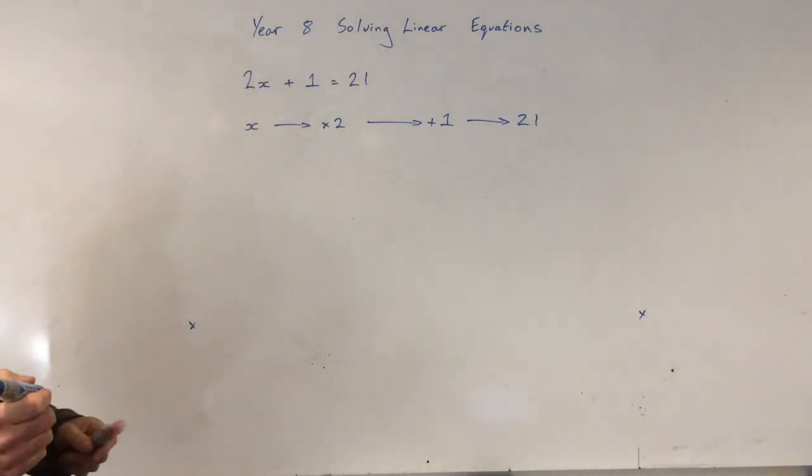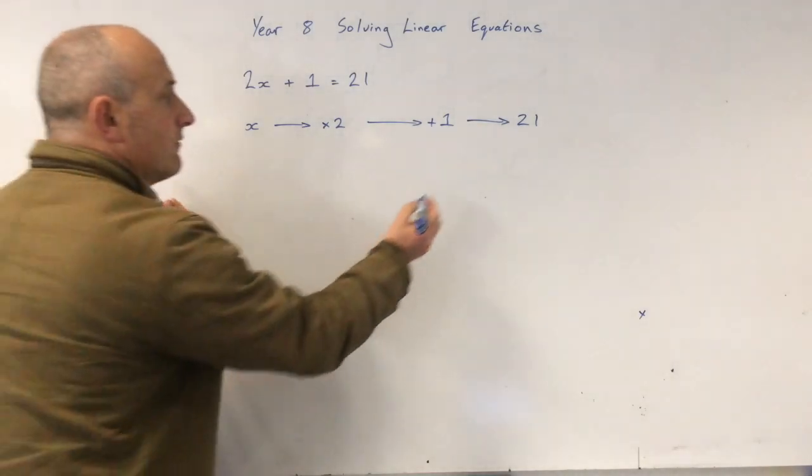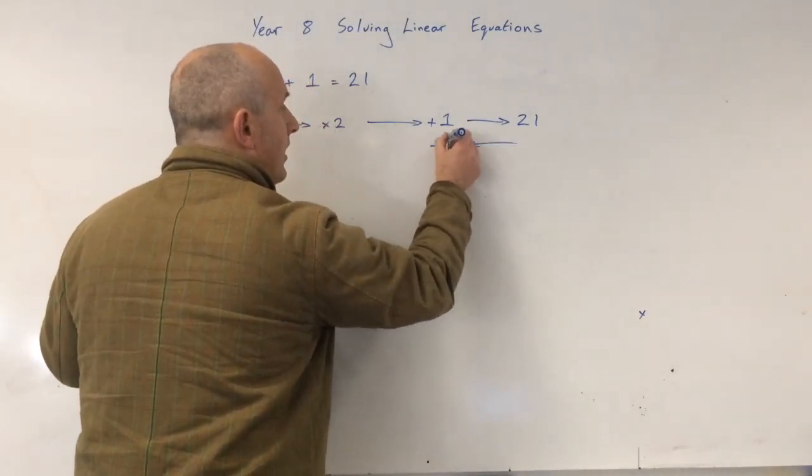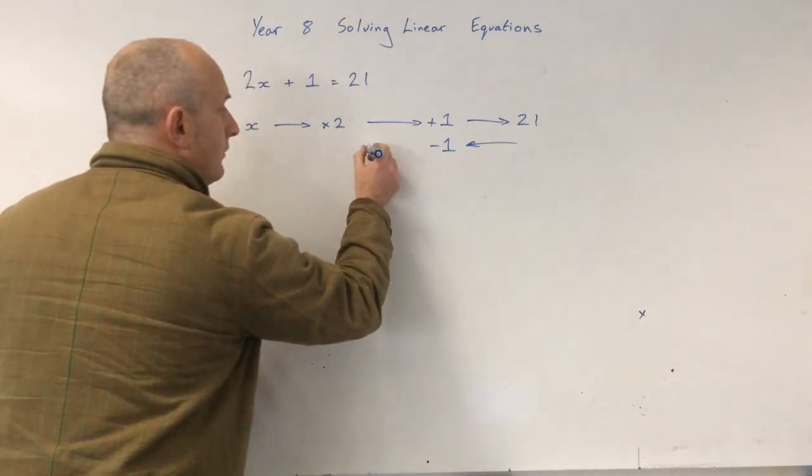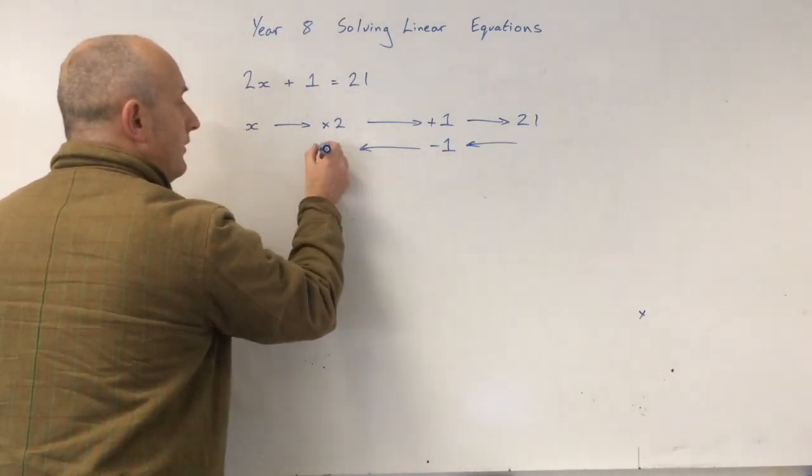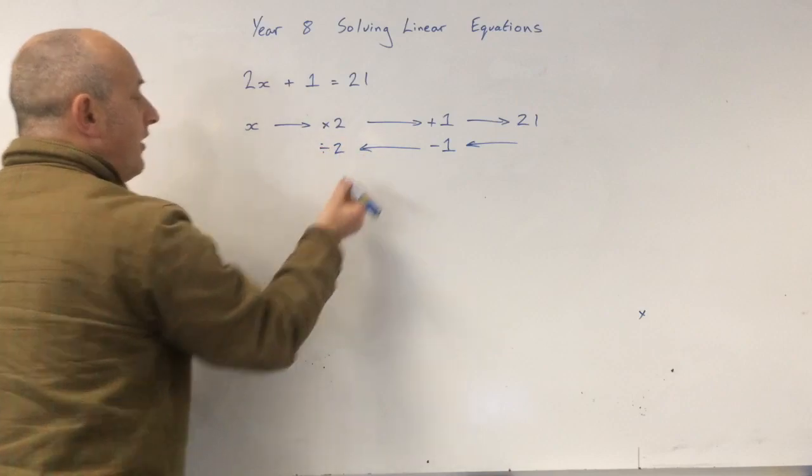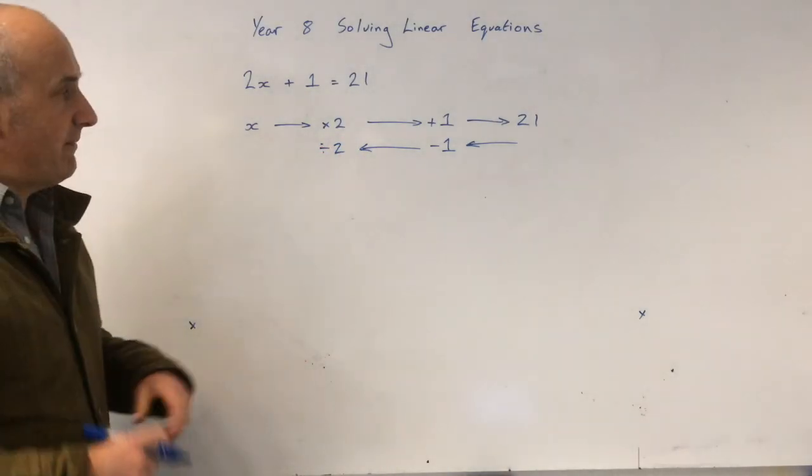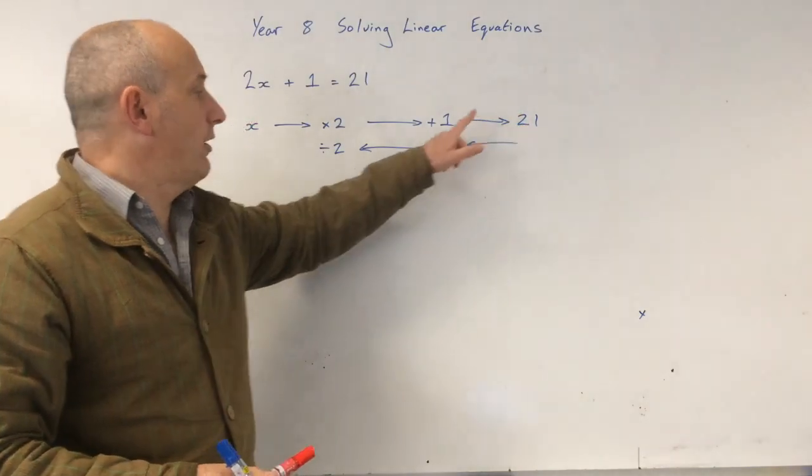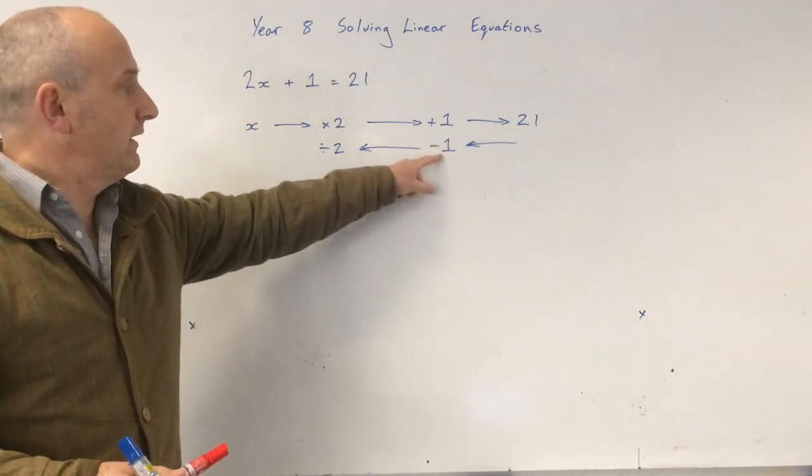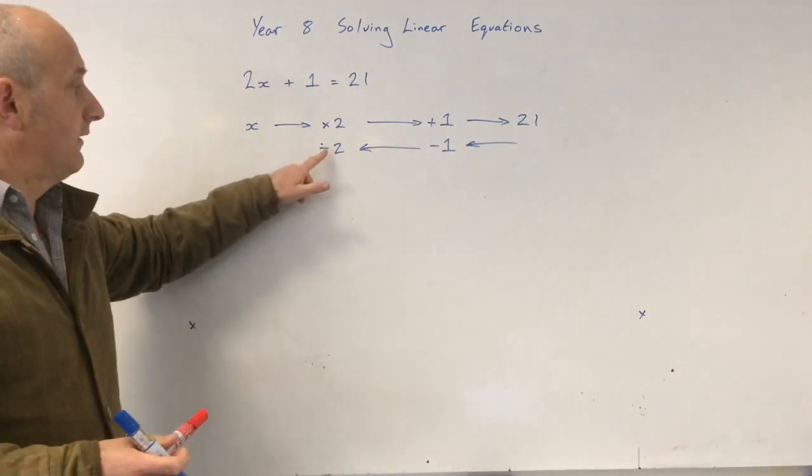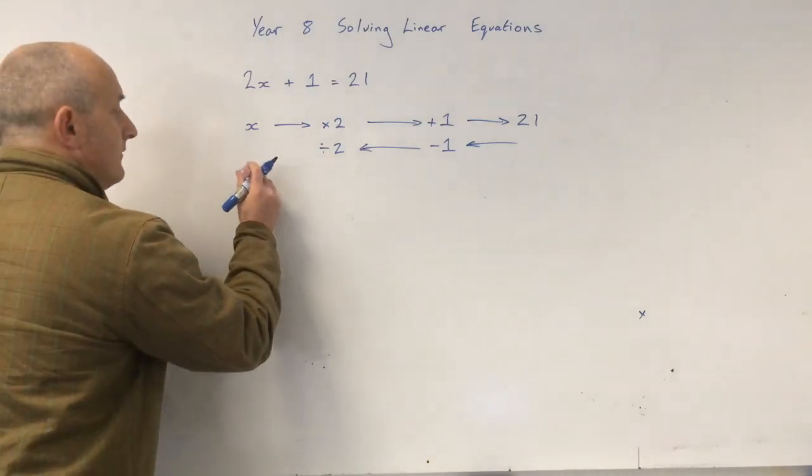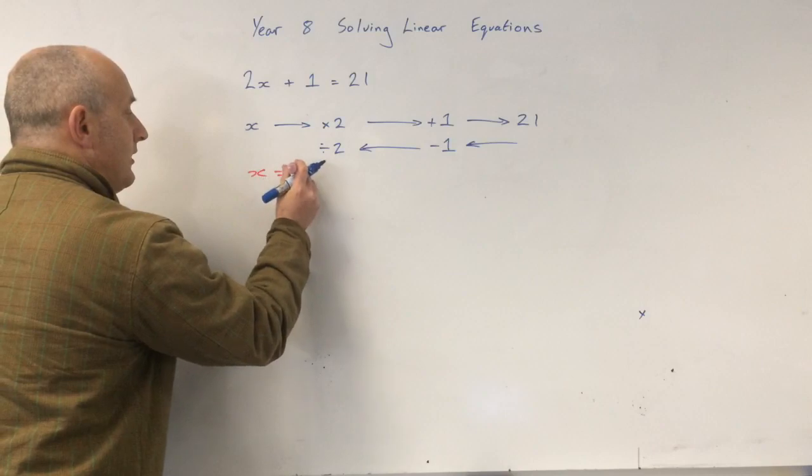So what do we need to do in reverse to find out what x is? We need to minus 1, then we need to divide by 2. This is called carrying out the inverse. So if we think about this, 21 minus 1 is 20, then divide by 2.